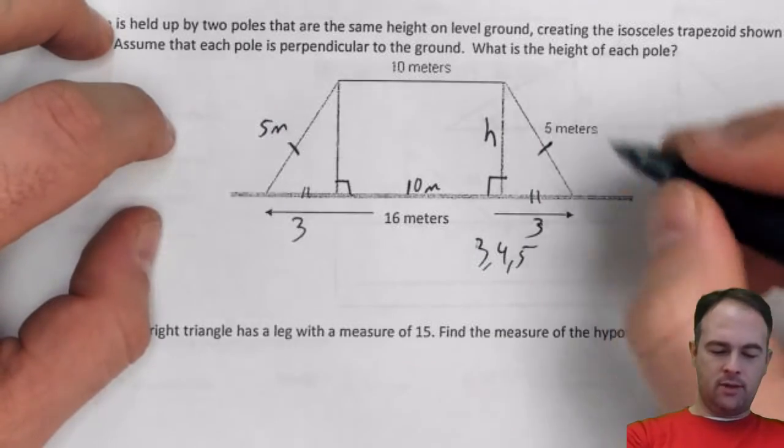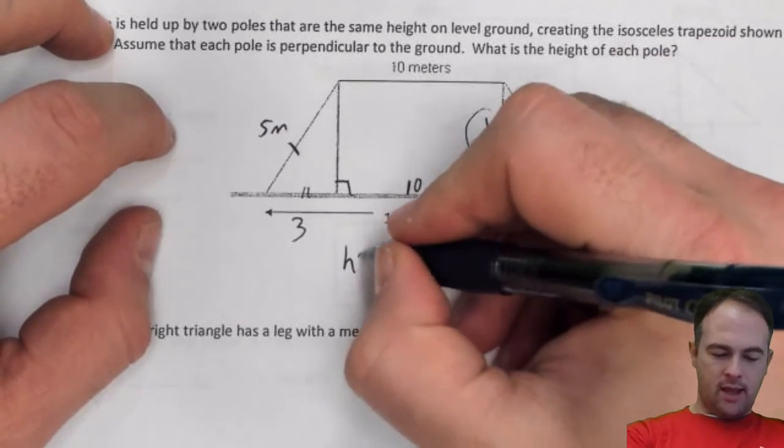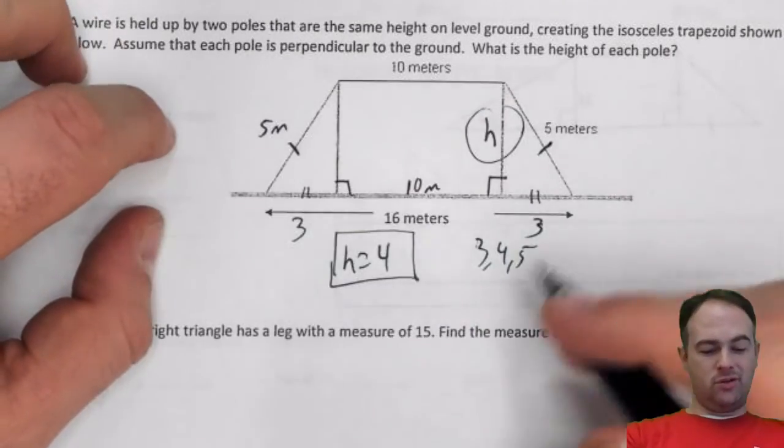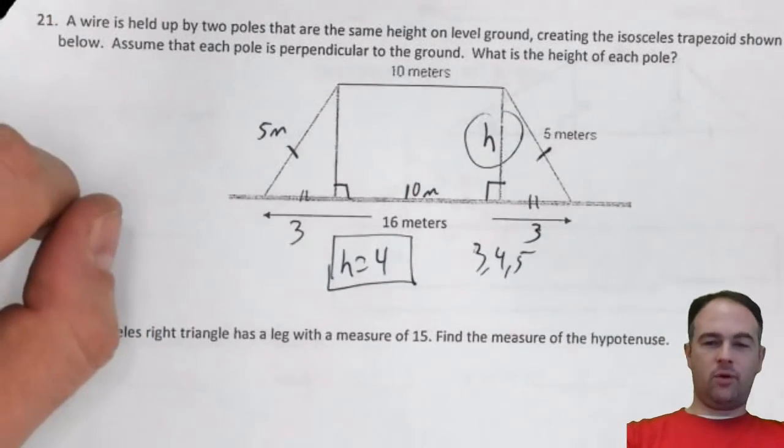3, 4, 5 right triangle, meaning that my h here has to equal 4. I mean if you really want to, you can do Pythagorean theorem on that, you're going to get 4 in the end.